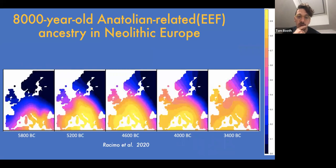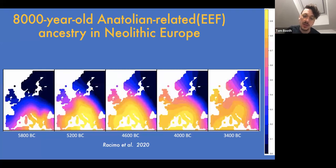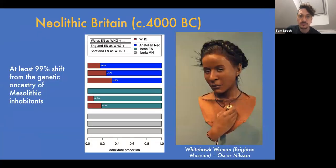In the interim, EEF ancestry spread from Anatolia through Europe via very slow movements over thousands of years. People carrying this Anatolian EEF ancestry mixed with local Western Hunter-Gatherer peoples as they moved across Europe, producing a mixture of predominantly Anatolian ancestry but with some Western Hunter-Gatherer ancestry from various parts of Europe.